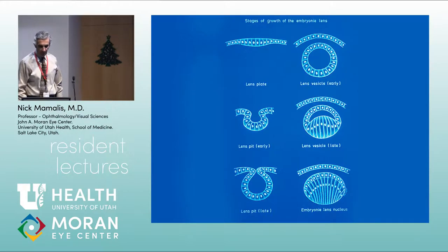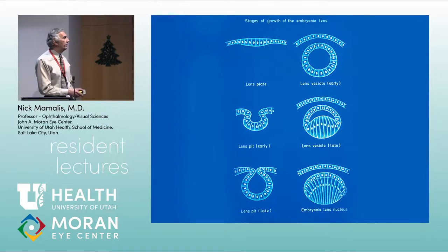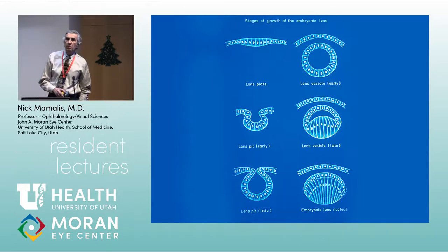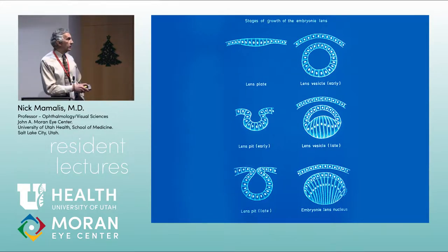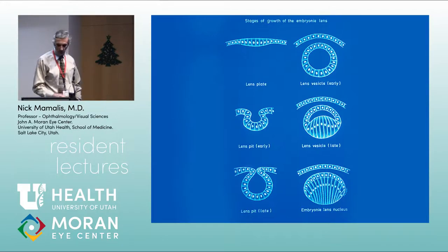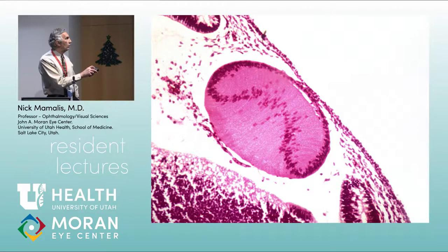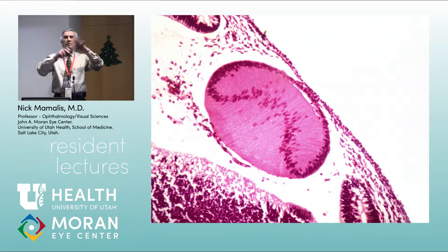Once the lens pit forms and pinches off into a vesicle, those cells grow across and fill the lens. The important clinical point is that a normal lens has no epithelial cells posteriorly — once the posterior cells grow across and fill the lens, cells migrate to the equator and send fibers anteriorly and posteriorly. You normally don't have lens epithelial cells inside the posterior capsule unless it's a pathologic state. This image of a fetus shows the lens epithelial cells going to the equator, fanning out like a flying saucer disc, sending fibers both anteriorly and posteriorly.